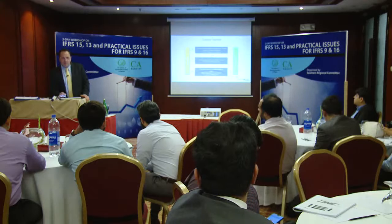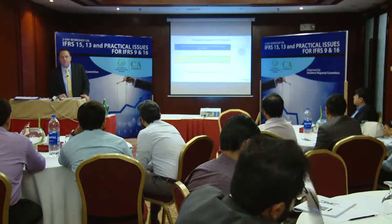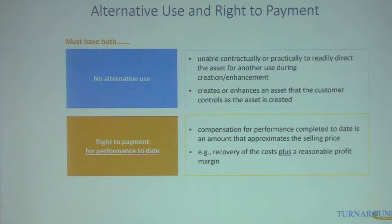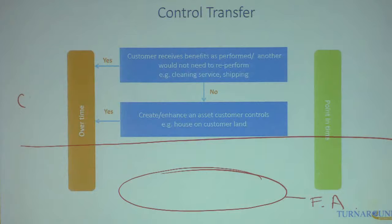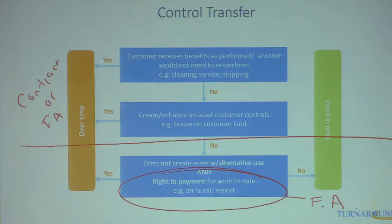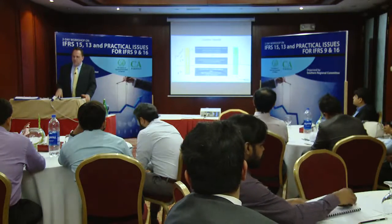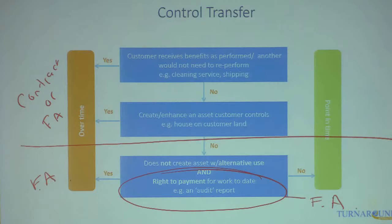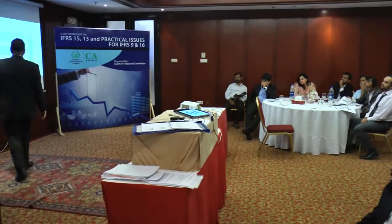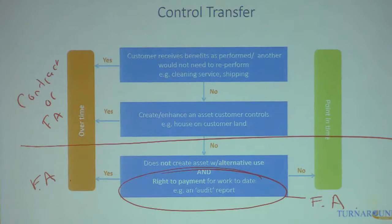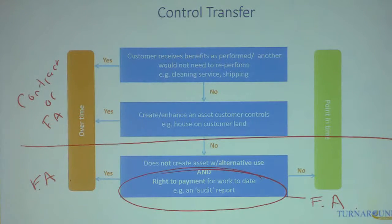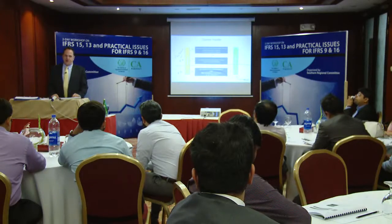The second criterion is if the customer controls the asset. For the first two scenarios, you can have either a contract asset or a financial asset. But for the third scenario, you can only have a financial asset. A financial asset means you're entitled to be paid; a contract asset means you're not entitled to be paid. So you cannot book any revenue in the third category if you don't have a financial asset. On an exam: can you have a contract asset and book revenue under the third scenario? The answer is no.